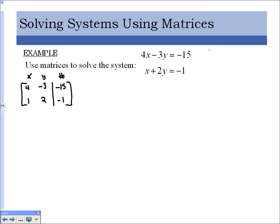Our goal when doing row operations is to get the matrix into row echelon form: a 1 in the top left, a 0 underneath that, and a 1 to the right of it. Everything else can be any number. The order is: first get the 1 in the top left, then get the 0 below it, then get the 1 to the right. We want 1s on the diagonal and 0s underneath the diagonal.